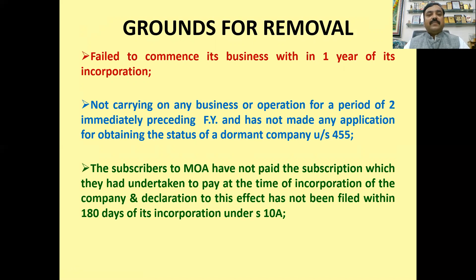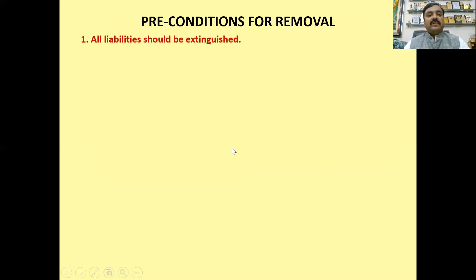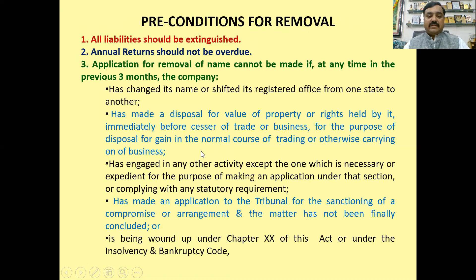Or the subscriber to the memorandum of the company has made no payment until now, has no subscription. What are the preconditions for removal? The company's liabilities should all be paid off. Returns — none should be pending; if there are, then you have to properly submit them. Also, if the company has done any work in the past three months, then you cannot file the application for removal.